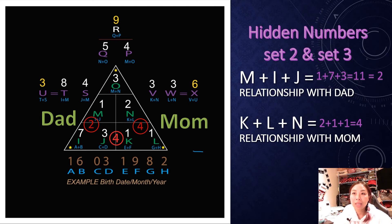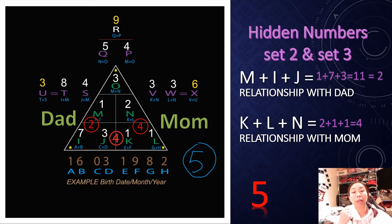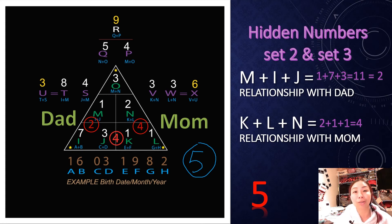If your number adds up to be a 5, a 5 means trouble. If it happens on your left side, that means you always cause trouble for your dad — maybe he always has to bail you out of something, or vice versa, you bailing your dad out of trouble. Same if it happens on the right side: if your N, K, L adds up to 5, that means your mother always brings you trouble, or vice versa, you always bring your mother trouble and she doesn't know what to do with you.